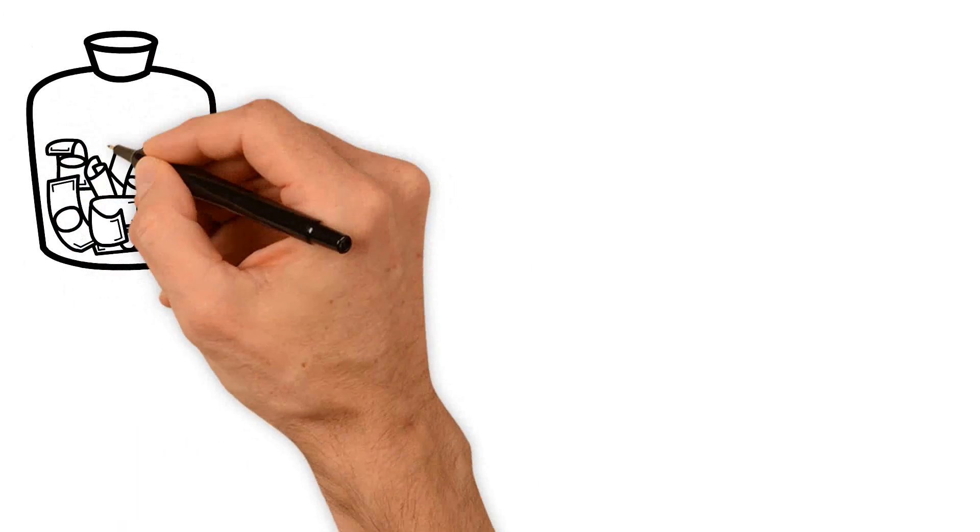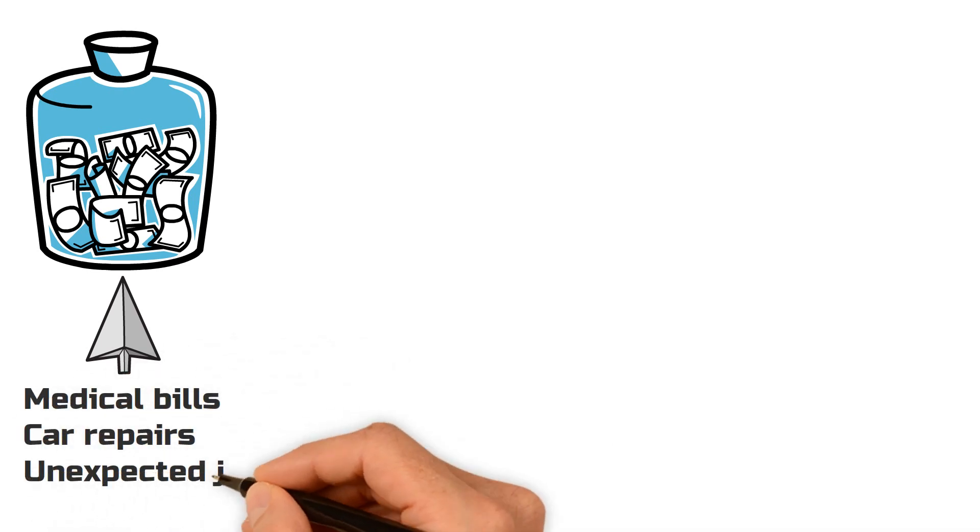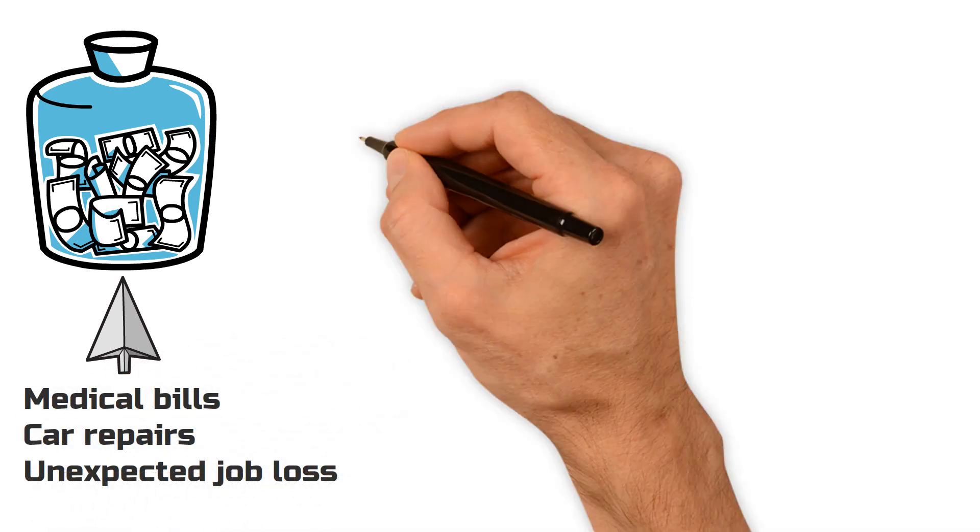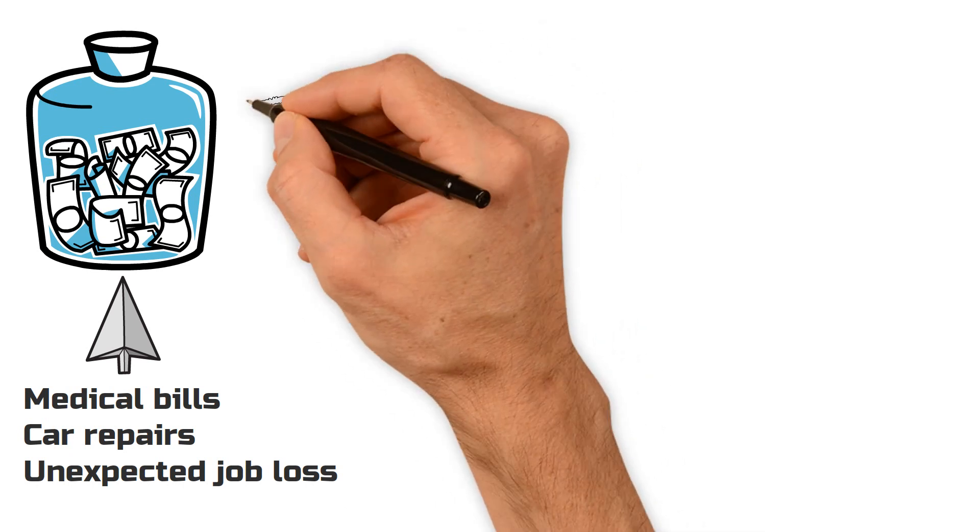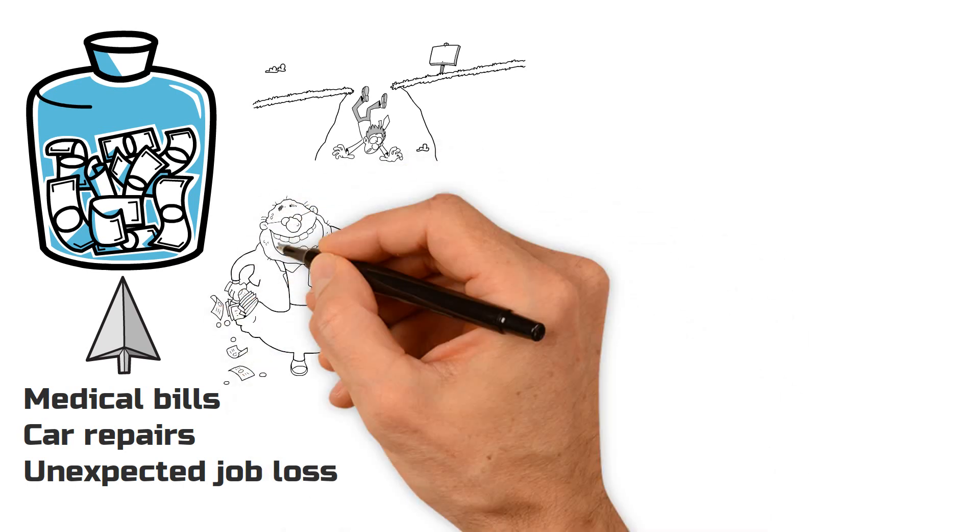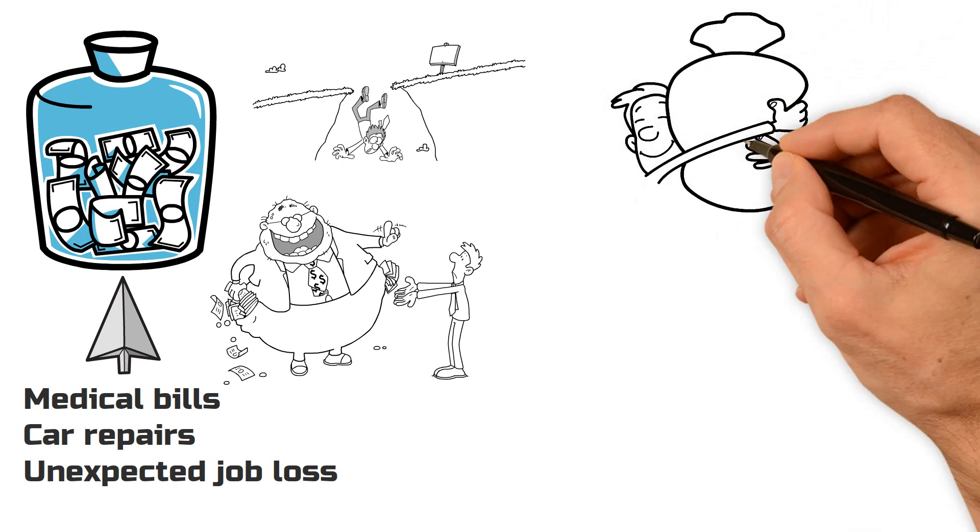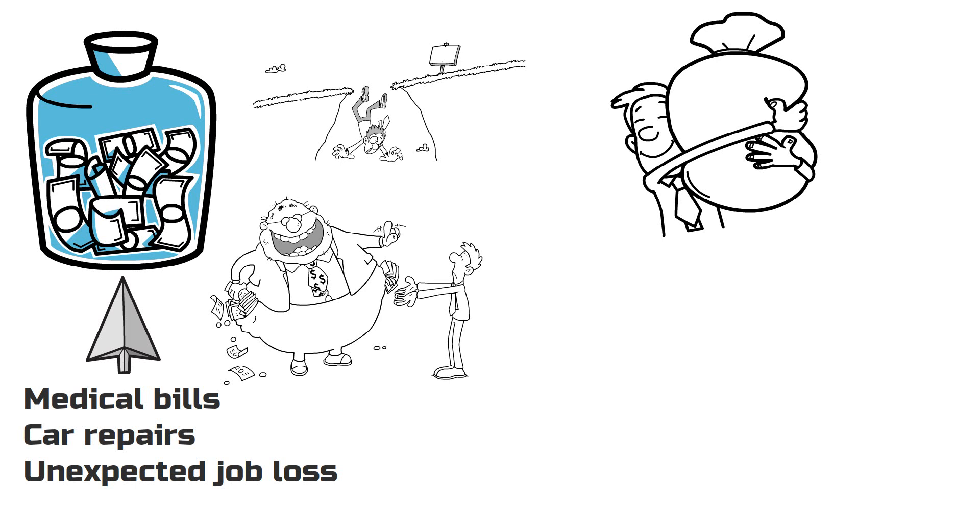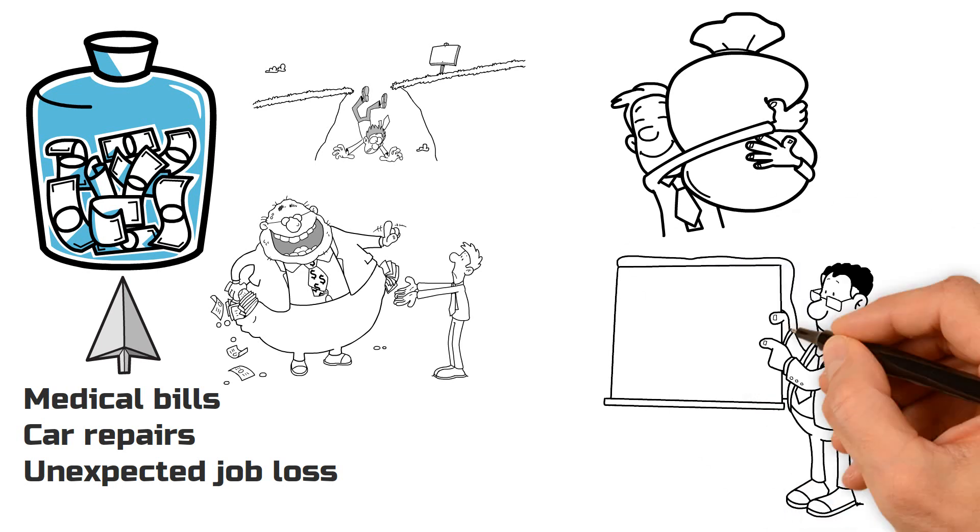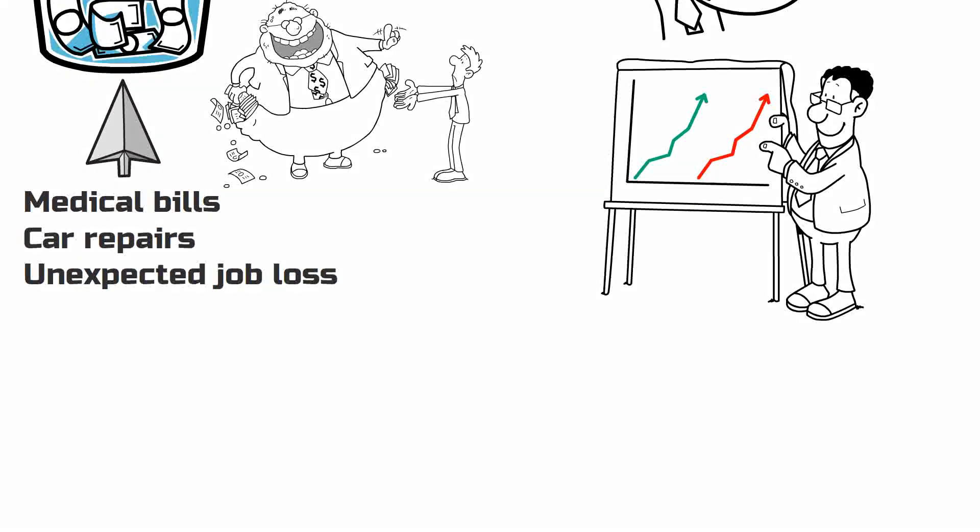I assume you know the importance of an emergency fund. An emergency fund is a stash of money set aside specifically for unexpected expenses, like medical bills, car repairs, or unexpected job loss. Life can be unpredictable, and having an emergency fund is like having a cushion to land on if you stumble. It prevents you from having to dip into your investments or go into debt when a financial curveball comes your way. Think of it as your financial first aid kit, always there to provide relief when needed. Building an emergency fund takes time and discipline, but it's an essential part of a solid financial strategy. So while you're on your journey to financial success, don't forget to pack that financial first aid kit - your emergency fund.